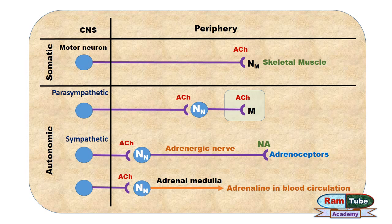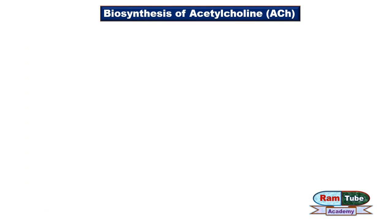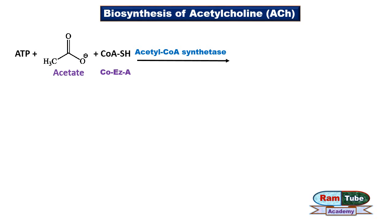Whereas noradrenaline is released in the case of the sympathetic nervous system. When acetylcholine binds with receptors on the adrenal medulla, it triggers the release of adrenaline into blood circulation. In the first step of biosynthesis, coenzyme A is acetylated with acetate and ATP in the presence of the enzyme acetyl-CoA synthetase, forming acetyl-CoA.